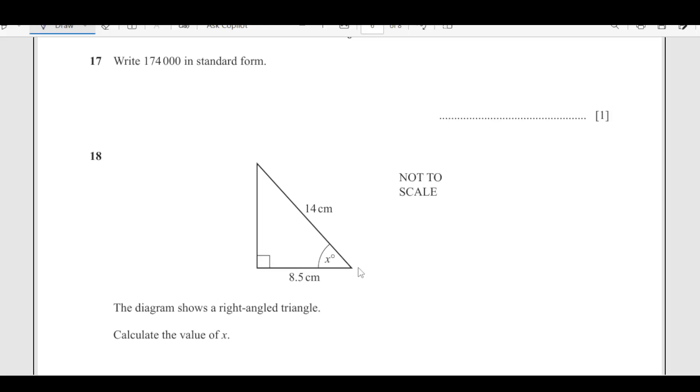Question 17: Write 174000 in standard form. In standard form, we write the decimal here and then 10 raised to power something. You can see the decimal is here. We're shifting 1, 2, 3, 4, 5 units, so it's 10 raised to power 5. The final answer is 1.74 × 10⁵. Remember to write your answer in the space provided.